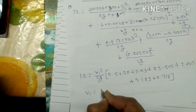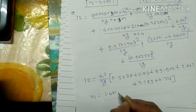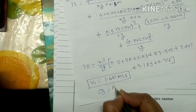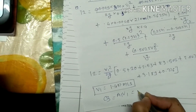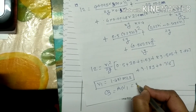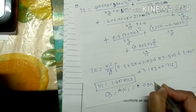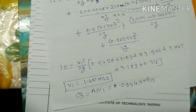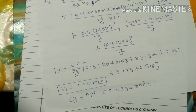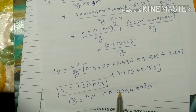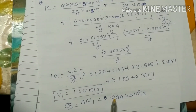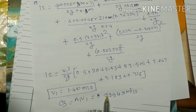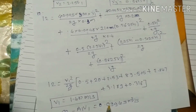Dividing by 2g and transferring to the other side gives v1 = 1.407 m/s. Then calculate Q = a1·v1 to get the final answer: Q = 0.09945 m³/s. If the answer is required in litres per second, multiply by 1000. The discharge answer should always be in the range of 0.0-something; otherwise your answer is likely wrong somewhere.